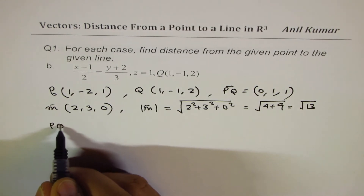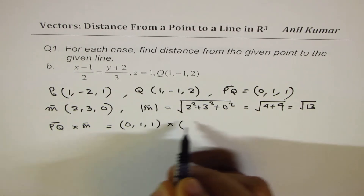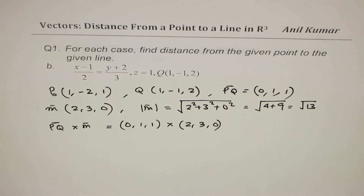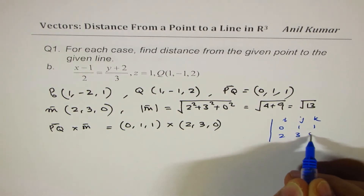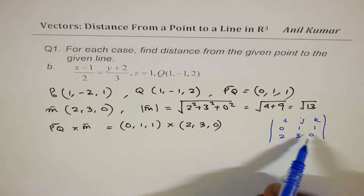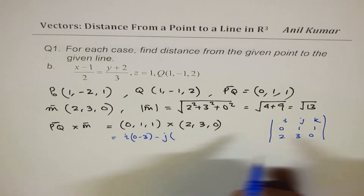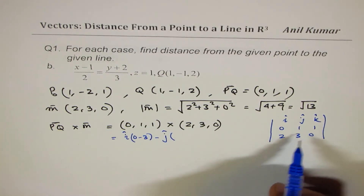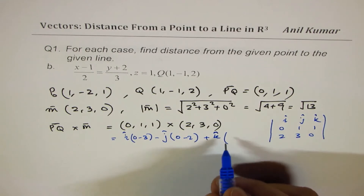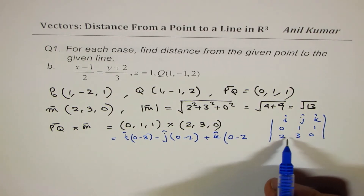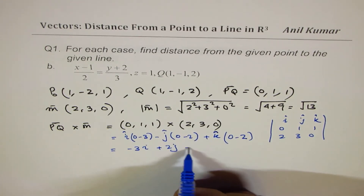Now let's calculate the cross product PQ cross M. PQ cross M is (0, 1, 1) cross (2, 3, 0). We write this as the determinant with i, j, k in the first row; 0, 1, 1 in the second row; 2, 3, 0 in the third row. We get i times (0 minus 3), minus j times (0 minus 2), plus k times (0 minus 2). That gives us minus 3i plus 2j minus 2k.